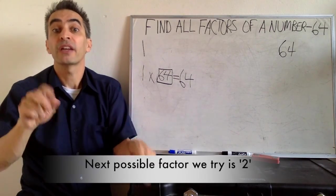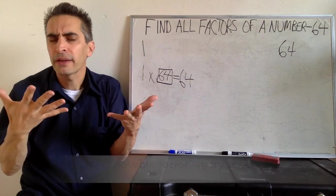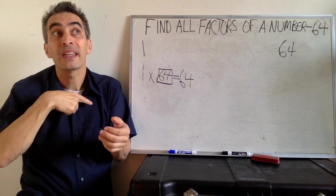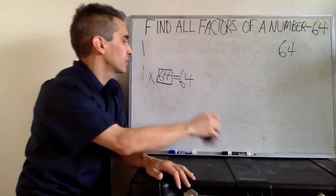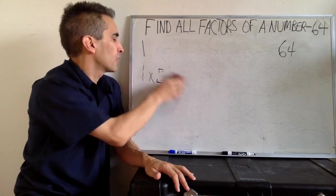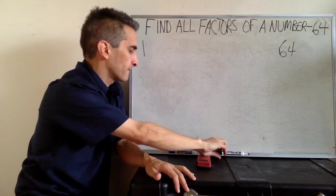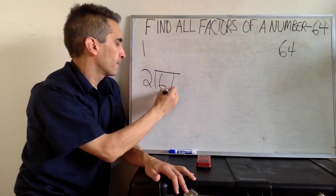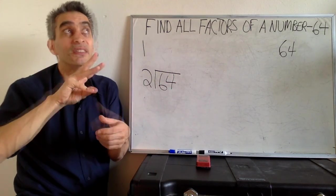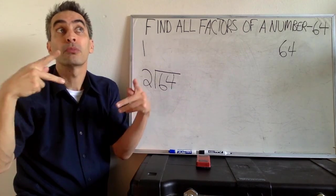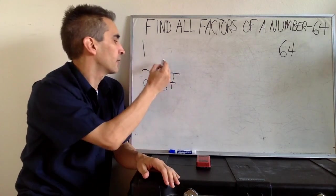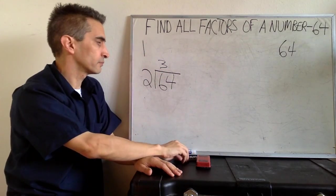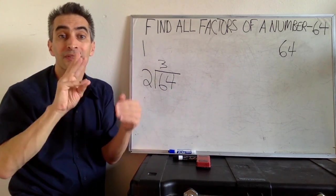Next, we're going to try 2. 2 times what equals 64? Maybe better if we divide it. 2 goes into 6. How many times? 2 times 3, right. We're going to multiply it to 2 and 3. 2 times 3 equals 6.